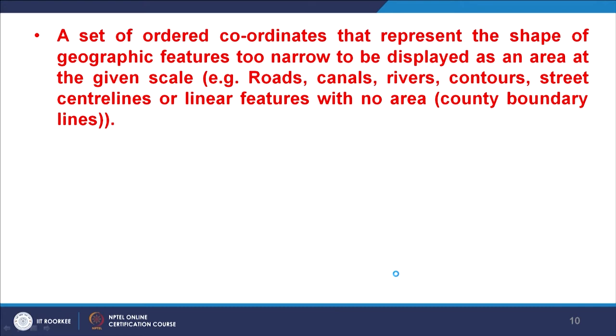Lines have direction and magnitude — magnitude is equivalent to length — hence it is a typical vector data. A set of ordered coordinates represents the line or shape of a feature, though it will not have width, only the line — that is why it is called a single-dimensional entity. Again this is scale dependent. For example, generally in a map at 1:50,000 or 1:250,000 scale, a road, canal, or river are all shown as simple lines. But we know in the real world, the road will have its own width, a canal will have width and depth, same with rivers.